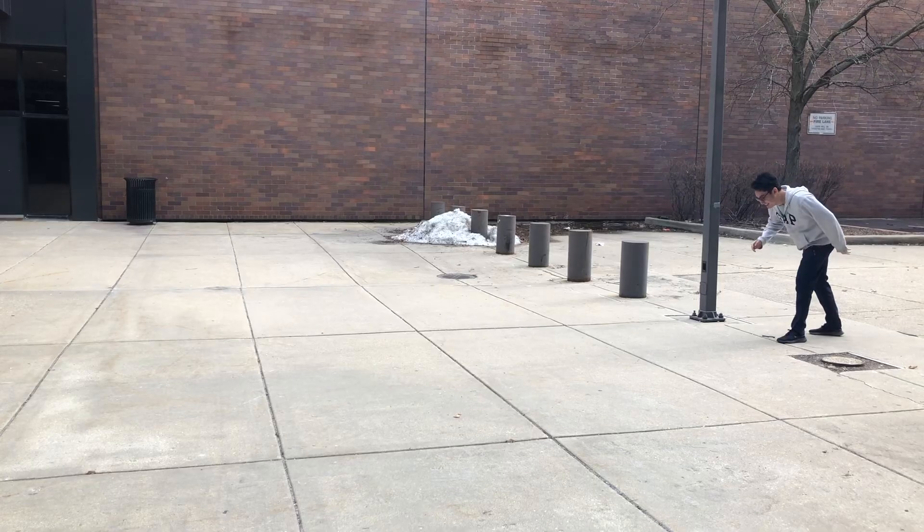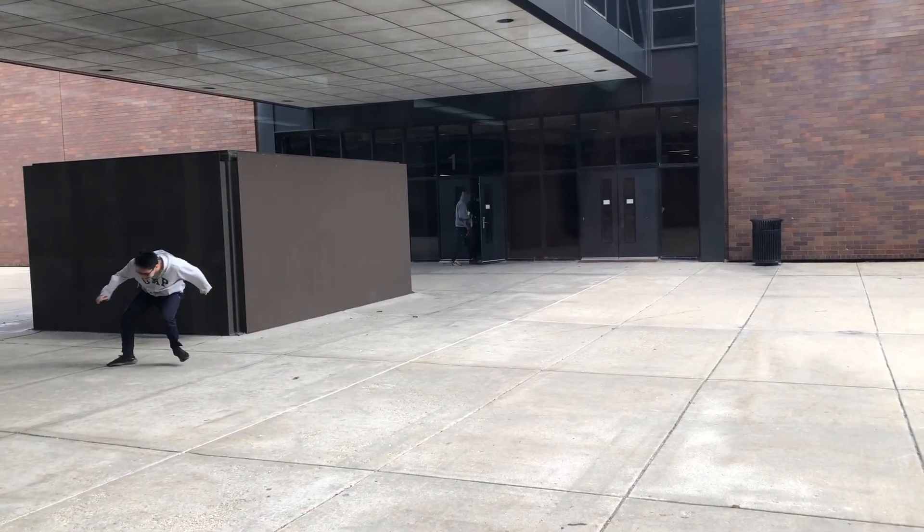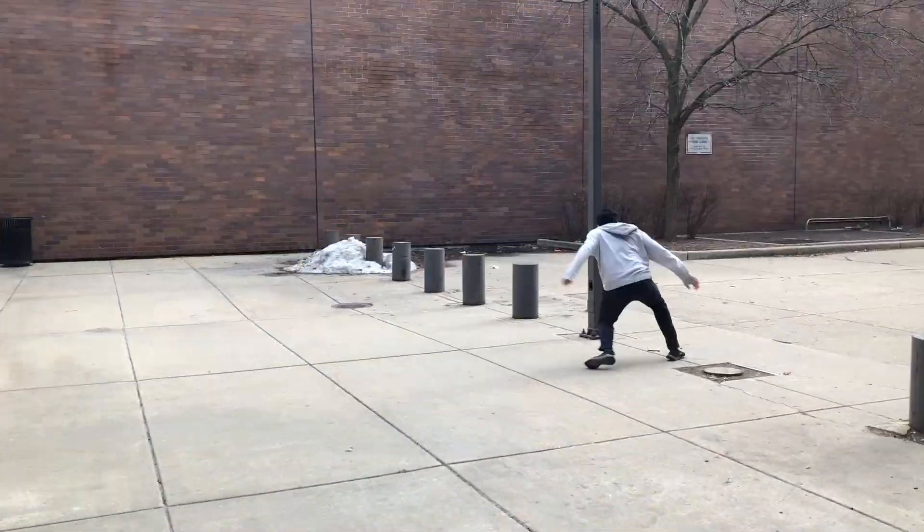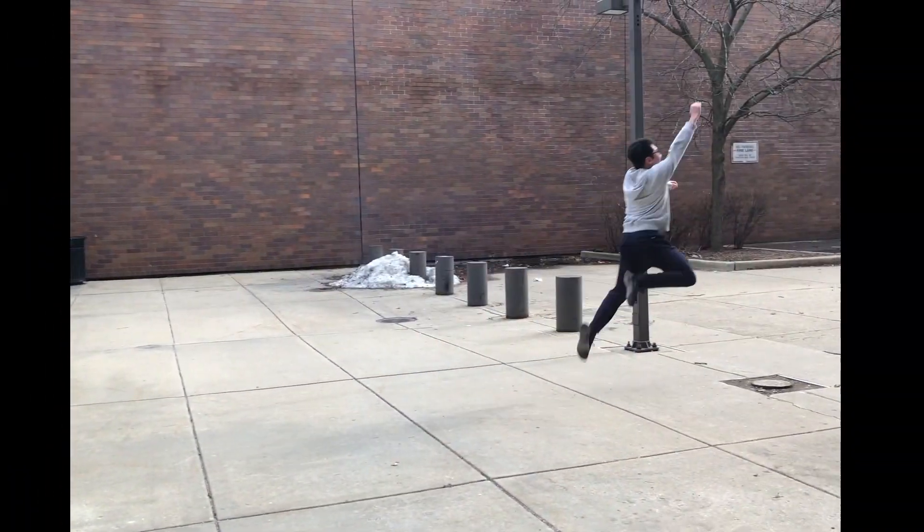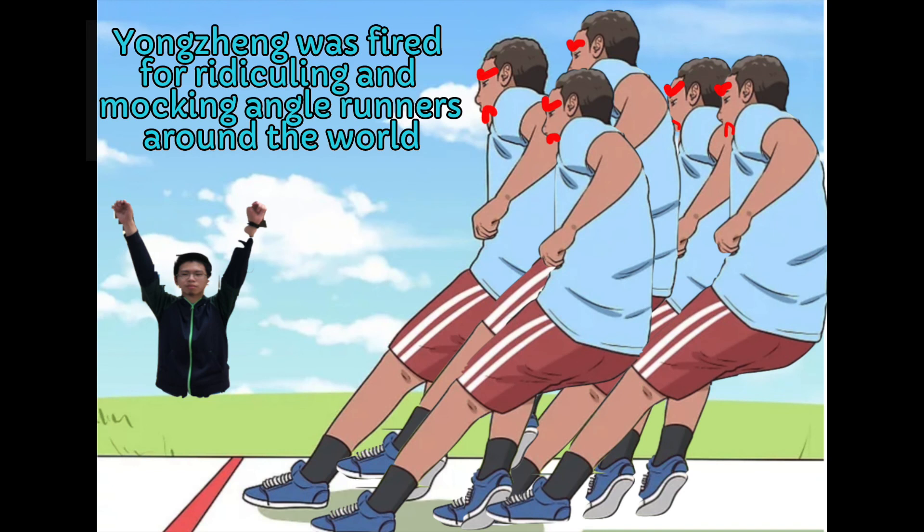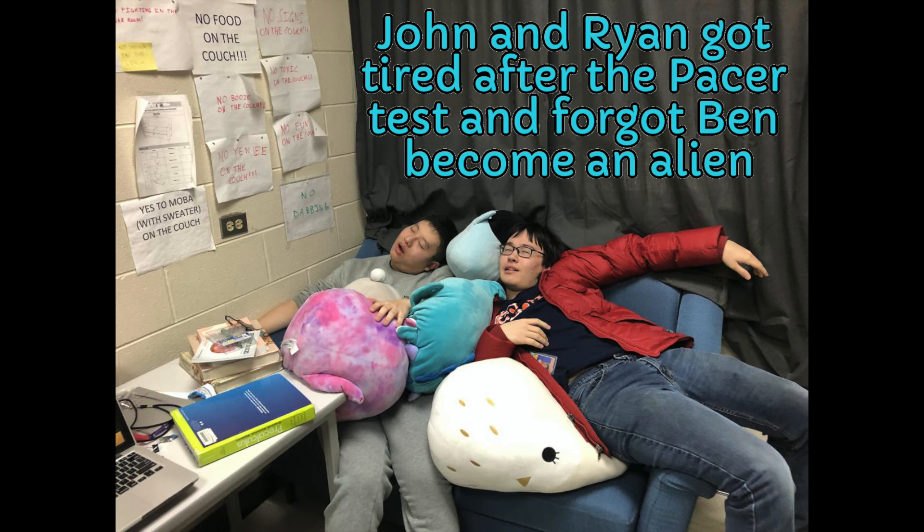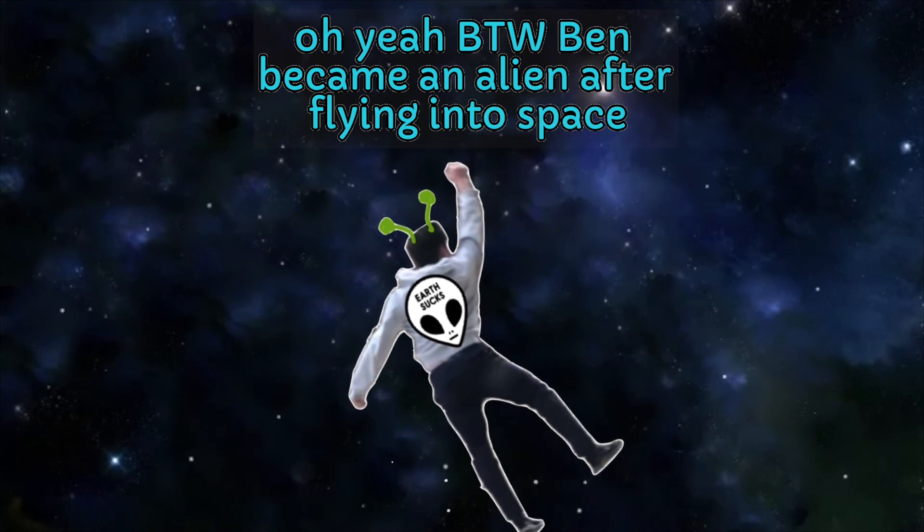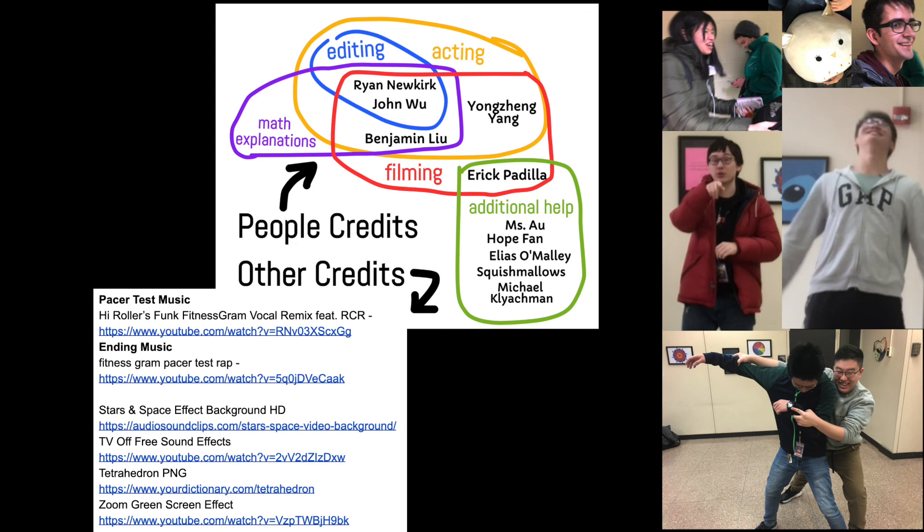One, start! Single lap should be completed. One, two, three, four, five, six, seven, eight... The FitnessGram pacer test is a multi-stage aerobic capacity test that progressively gets more difficult as it continues. The 20-meter pacer test will begin in 30 seconds. A single lap should be completed every time you hear this sound. Remember to run in a straight line and run as long as possible. Don't have an asthma attack.